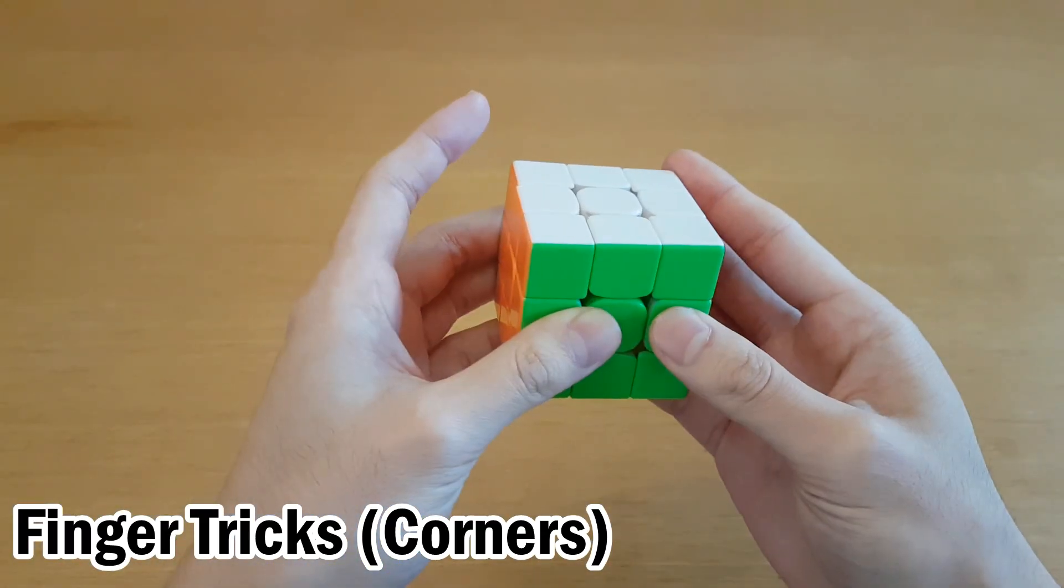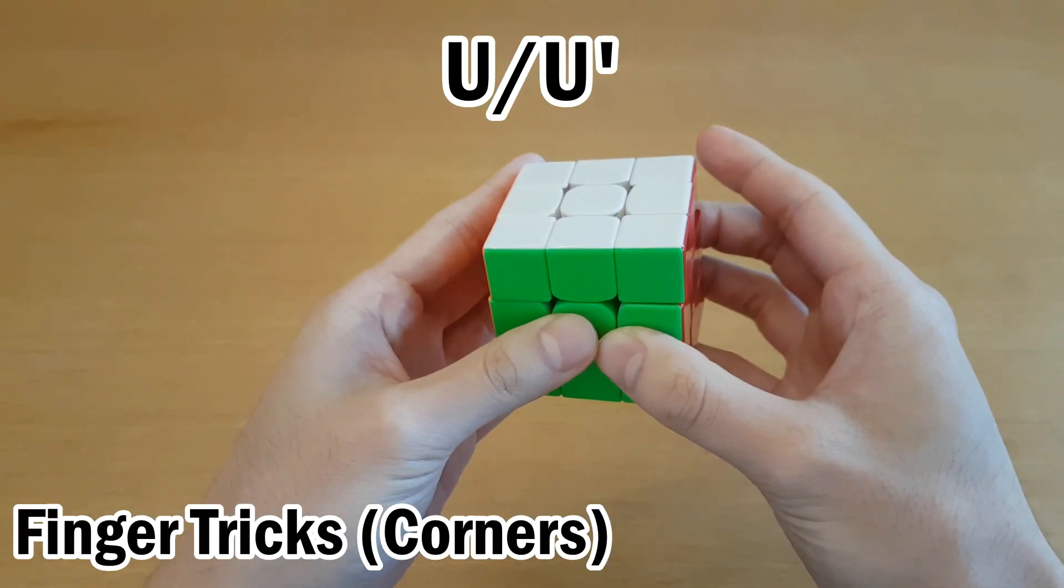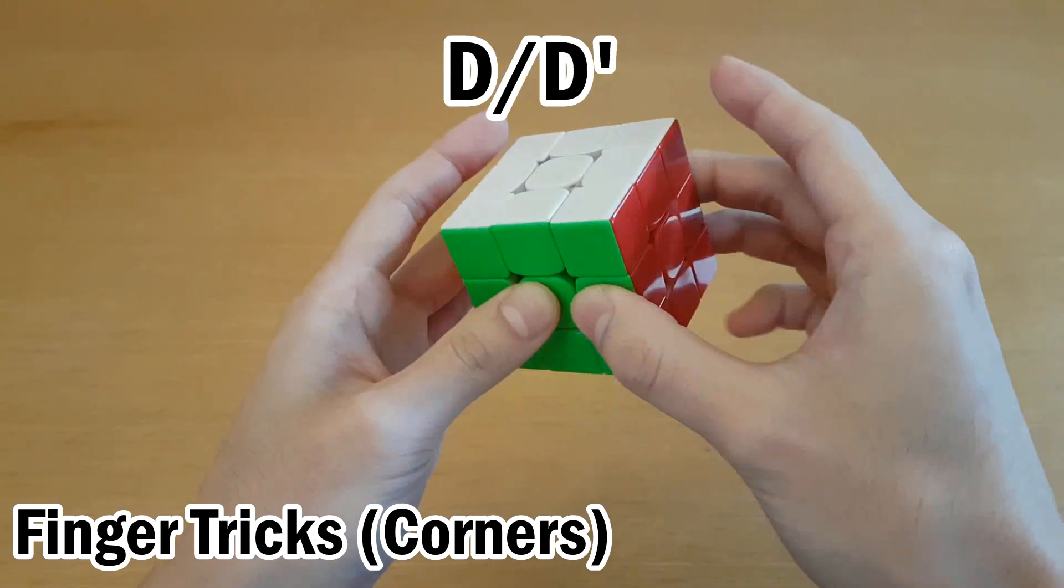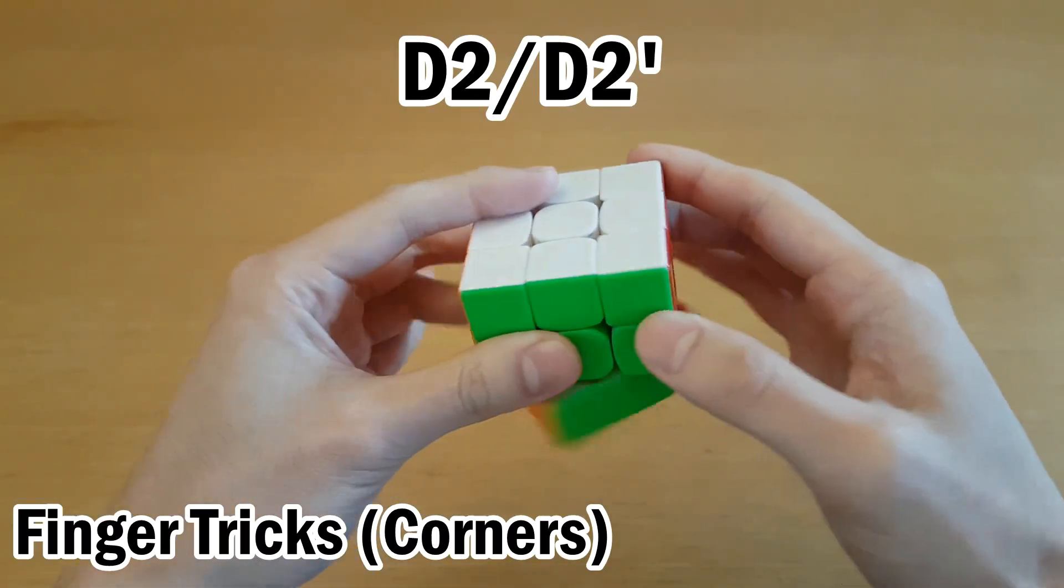Then here are some of the finger tricks you have to be able to do. U2 with your right hand. U in either direction with either left or right hand. Right hand U when your thumb is on top. Right hand U when your thumb is on the bottom. D moves in either direction with both of your hands. Ring and pinky D2 with both of your hands.